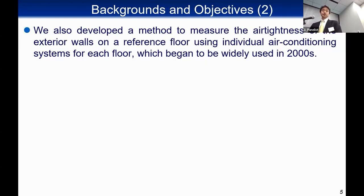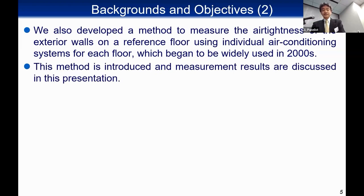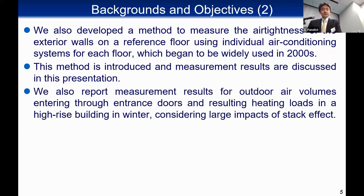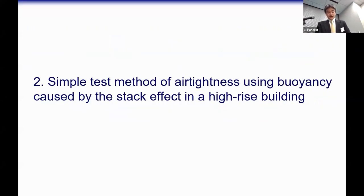Through the activities of technical committees of the Architecture Institute of Japan (AIJ), we calculated the amount of air leakage at the exterior walls of three model buildings — low-rise, middle-rise, and high-rise — and developed equations to manually calculate an infiltration rate. We also developed a method to measure the air tightness of exterior walls on a reference floor using individual air conditioning systems, which began to be widely used in the 2000s.